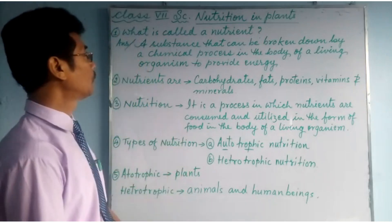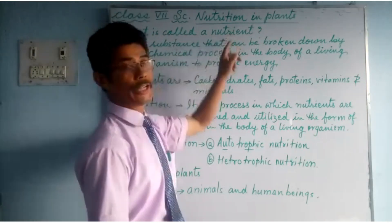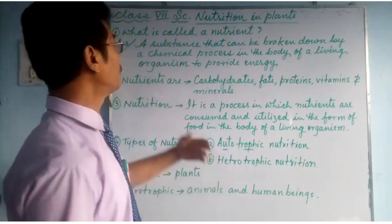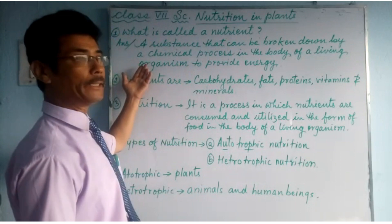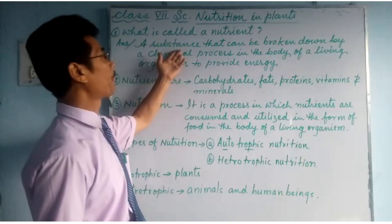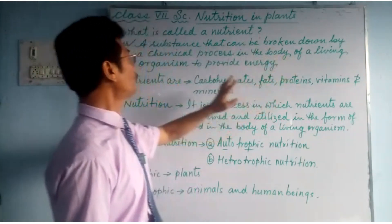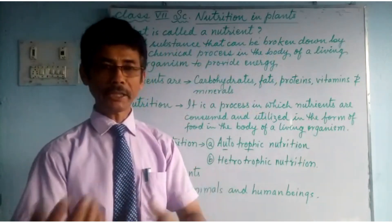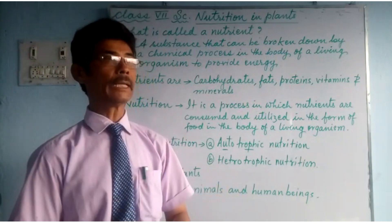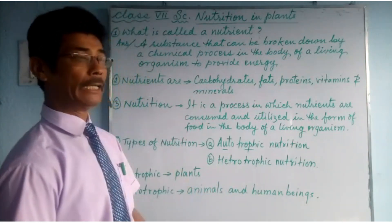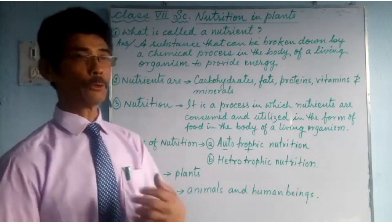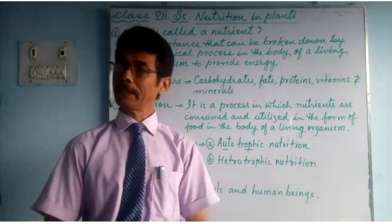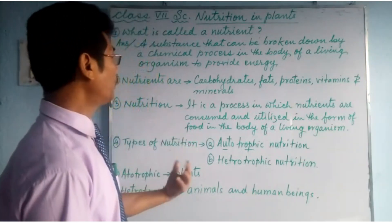Number 1: What is called a nutrient? Your answer should be like this. A substance that can be broken down by a chemical process in the body of a living organism to provide energy to do various kinds of activities — that is called a nutrient.